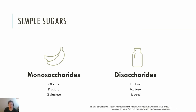Let's talk about simple sugars, which includes monosaccharides and disaccharides. Monosaccharides, or single sugars, include glucose, which is often called blood sugar; fructose, which is found in fruits, vegetables, honey, and high-fructose corn syrup; and galactose, which is primarily found in milk and dairy products.